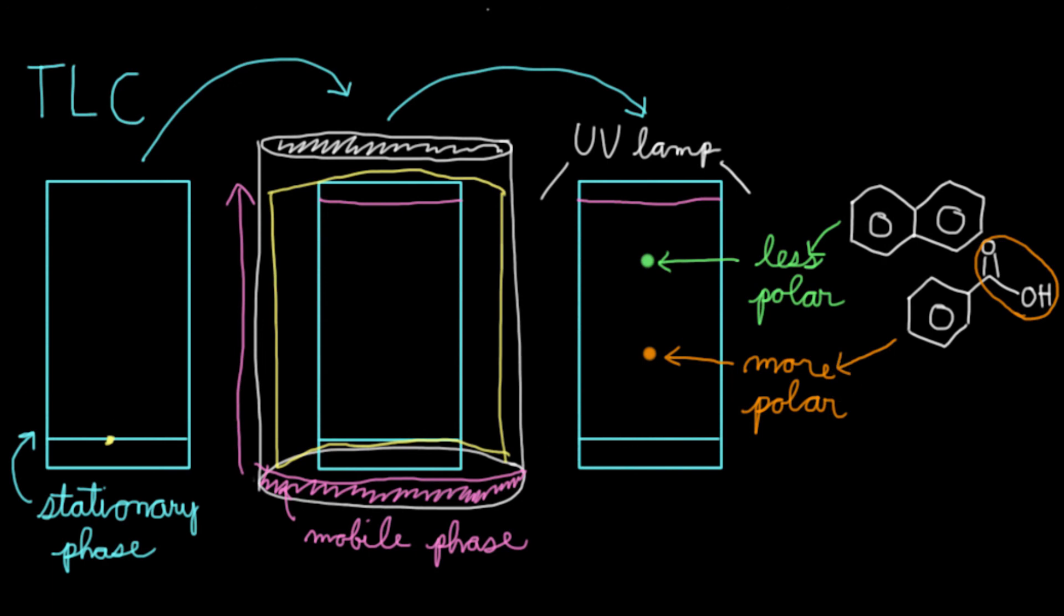And that's how you do a TLC in a lab. Again, let's review. You first have your plate that you put a little spot on. You put it into the developing chamber, which contains the mobile phase. Wait a little bit for the mobile phase to travel upwards. Pull it out of the chamber. And then use a UV lamp to see what spots are there and try to compare those two spots in terms of polarity.